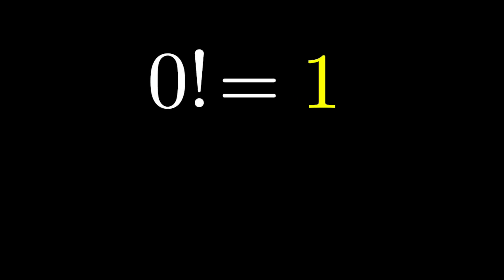0 factorial is 1, or at least that's how we define it. But why?